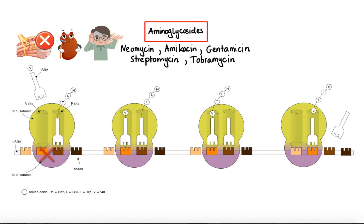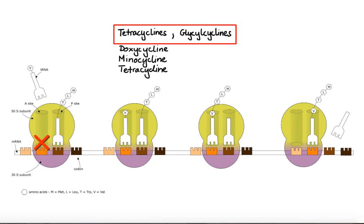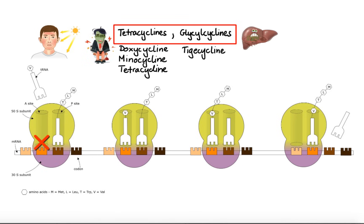Now let's move on to tetracyclines and their derivatives, glycylcyclines. Just like aminoglycosides, tetracyclines and glycylcyclines also bind to the 30S ribosomal subunit. However, their primary mode of action is by blocking entry of aminoacyl-tRNA molecules into the A-site of the ribosome, thus preventing introduction of new amino acids to the growing peptide chain. This action is usually inhibitory and reversible upon withdrawal of the drug. Examples of tetracycline antibiotics include doxycycline, minocycline, and tetracycline. The glycylcycline antibiotic is tigecycline. Side effects include GI disturbances, photosensitivity, and hepatotoxicity. Tetracyclines have strong affinity for calcium and can accumulate in developing teeth and bones, leading to discoloration of teeth and inhibition of bone growth.